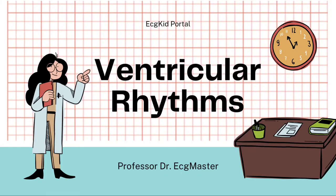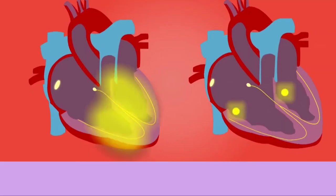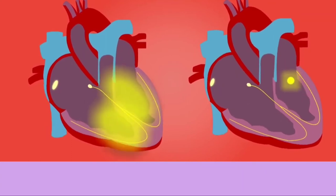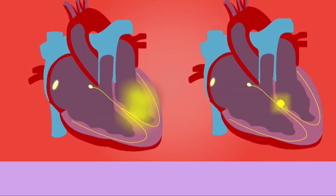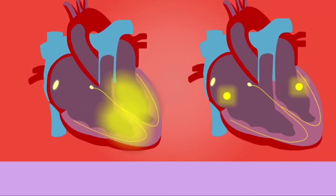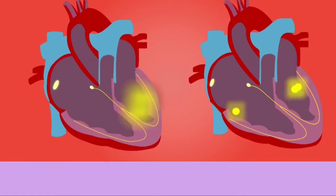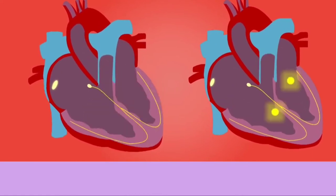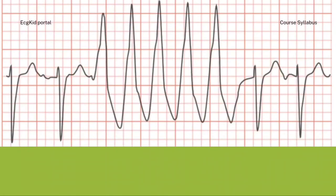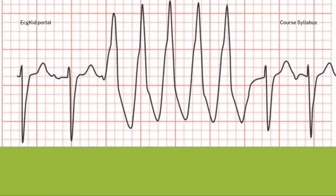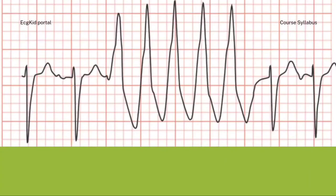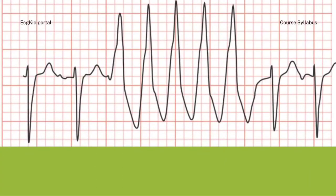Ventricular rhythms arise when the ventricles take control of electrical activity by themselves. Most of these are terminal or life-threatening. Ventricular rhythms lead to abnormal ventricular depolarization as they are initiated within the ventricles instead of the SA node in the right atrium. Abnormal depolarization causes abnormal repolarization as well, producing two characteristic ECG changes: a widened QRS complex and a discordant ST segment, meaning the QRS and ST segment differ in direction.